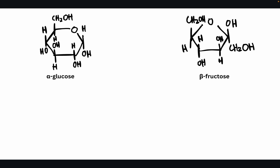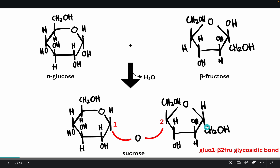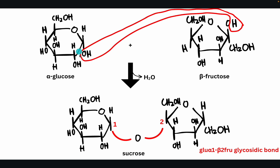When we have an alpha glucose and a beta fructose, they are different sugars. Via condensation reaction, they produce sucrose. The glycosidic bond is called a glucose-alpha-1,beta-2 glycosidic bond because the hydroxyl of C1 of alpha glucose reacts with the hydrogen of C2 of beta fructose — the beta fructose flips so that carbon 2 is positioned at the linkage point.